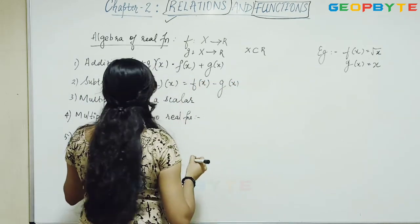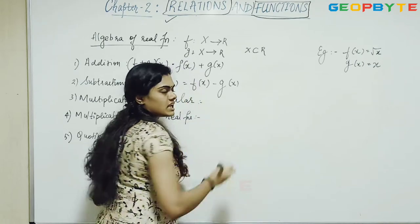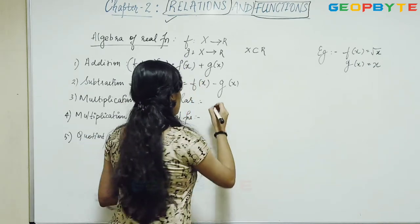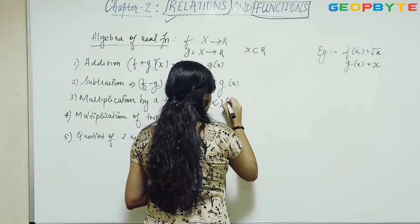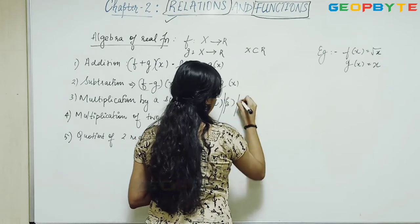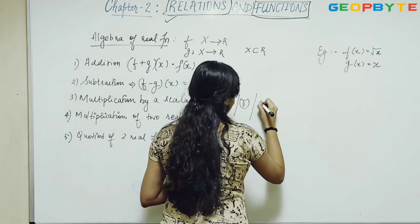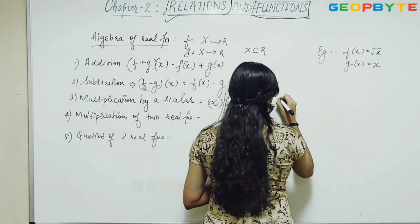And for multiplication by scalar, what is a scalar? It is just an integer number which is represented by alpha or beta or anything, gamma, any alphabet which is an integer.